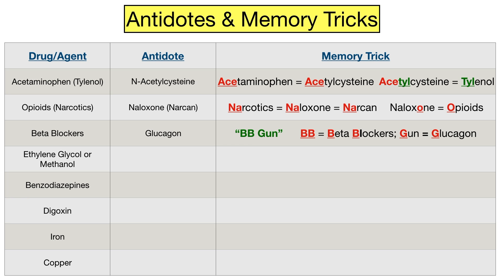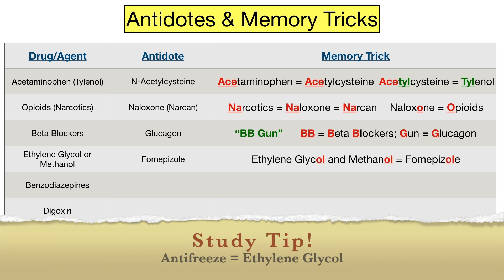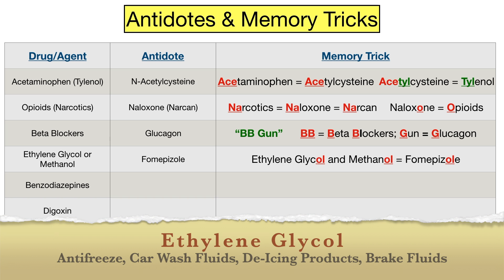Next we have ethylene glycol or methanol. Hit pause in the video and try to name the antidote used to treat these toxicities. It's fomepizole. The memory trick is another easy one because ethylene glycol, methanol, and fomepizole all rhyme, and you can use the OL in each word to remember the associations. Board exams like to use antifreeze or car wash fluids as the source of ethylene glycol, so when you see antifreeze, car wash fluids, de-icing products, or vehicle brake fluids in a question stem, think potentially ethylene glycol involvement.